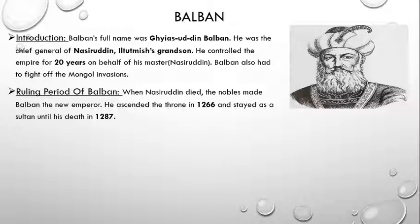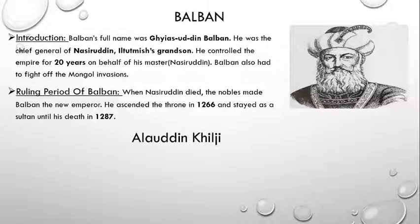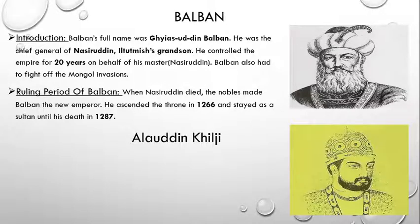Because before Balban, Il Thutmish was also a slave, and the founder of the Mamluk dynasty, Qutbuddin, was also a slave. When Balban died, many new emperors came who ruled over this dynasty, but those emperors were weak and couldn't keep hold of the whole empire. So after them, a new dynasty started named the Khilji dynasty. And here we will study about Alauddin Khilji, who was one of the strong emperors of the Khilji dynasty.